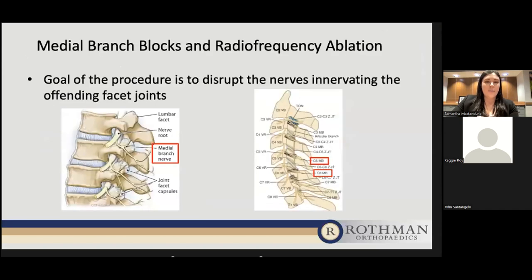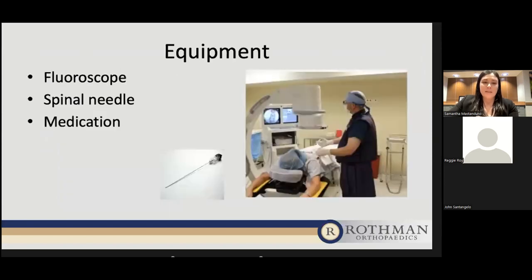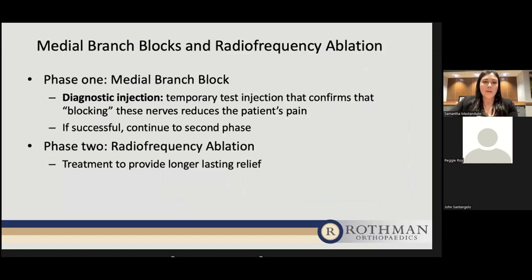This procedure is done in two phases. The first phase is the medial branch block — a diagnostic injection — a temporary test that confirms that by blocking these nerves, the patient's pain is reduced. If successful, we continue to the second phase: radiofrequency ablation. The timeline for the patient: we see the patient, identify facetogenic pain, determine which facet joints are involved based on history, physical exam, and imaging, then schedule the medial branch block. Before the procedure, we provoke the pain and ask patients not to take any pain medication beforehand so we have a high baseline pain score (out of 10). Loading the facet joints involves extending the patient back and twisting them to one side, putting more force onto those joints.